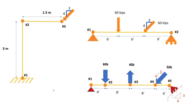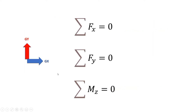So far, we have calculated the reactions of these types of structures that you see on the screen. The common point between all the structures shown here is that they are made of one single rigid body, and if structures of such type are statically determinate, then we can use the equations of equilibrium to solve for the structural reactions.